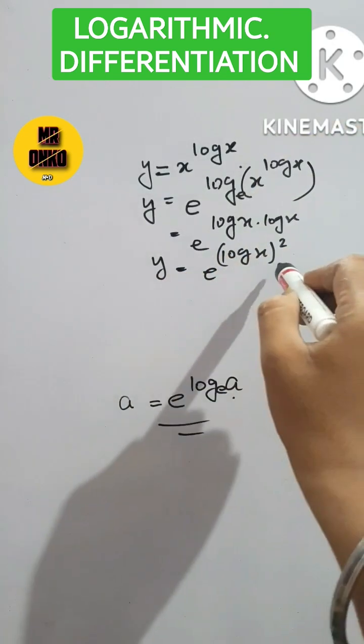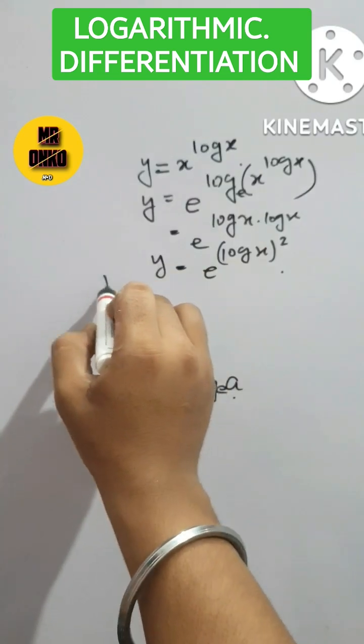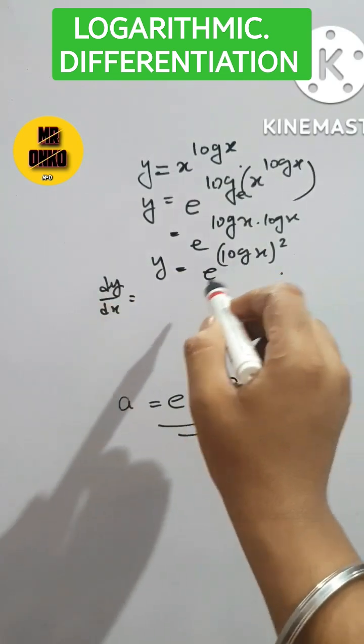Now this is the given function in simplified form. Now we have to find the differentiation first order, that is dy dx equals to.